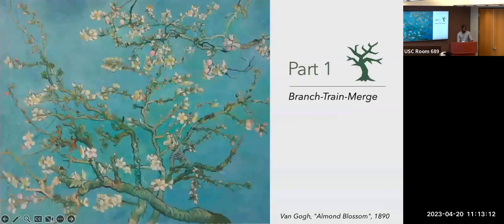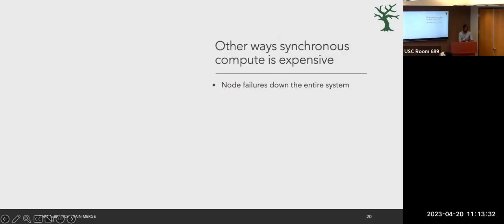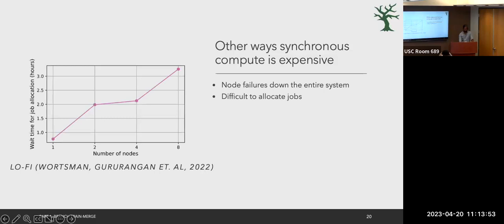Looking at one of the main limitations of dense training — it's really expensive. The main culprit is the need for synchronous compute: communicating gradients and activations across all GPUs at each step, with cost growing with model size. There are other practical limitations too. If a single node fails, the entire system goes down. It's also difficult to allocate massive synchronous jobs — we found almost a linear increase in average wait time as you allocate jobs with more nodes on the Meta cluster.